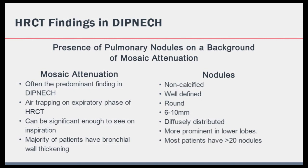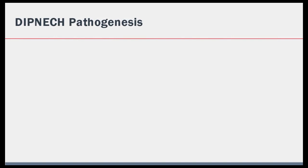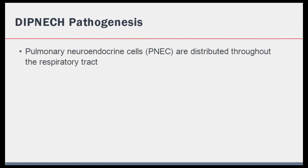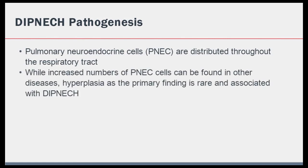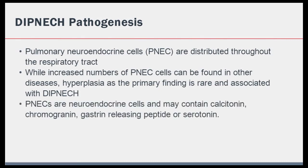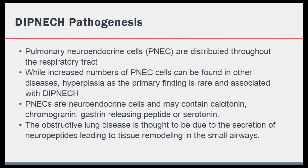To briefly describe the pathogenesis of DIPNECH: pulmonary neuroendocrine cells are distributed throughout the respiratory tract. While increased numbers of these cells can be found in other diseases, hyperplasia of these cells as the primary finding is rare in other conditions and is specifically associated with DIPNECH. These neuroendocrine cells may contain calcitonin, chromogranin, gastrin-releasing peptide, or serotonin. It is believed that the obstructive lung disease occurs as a result of the secretion of these neuropeptides, leading to tissue remodeling in the small airways.